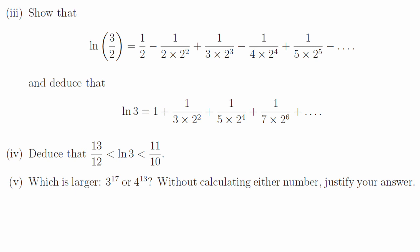Part 5. Take logarithms of both numbers and use the inequalities from before to compare them. 3 to the 17 is larger.